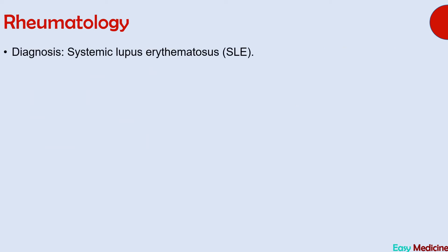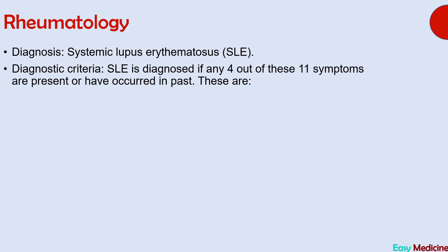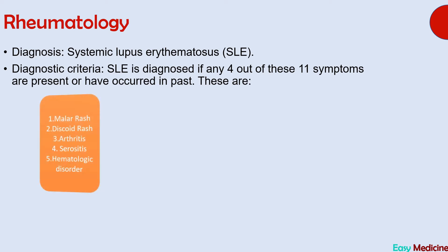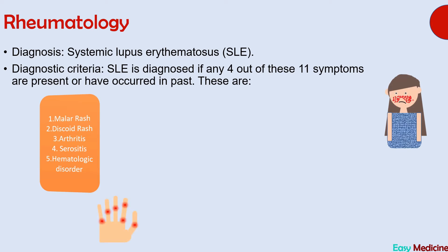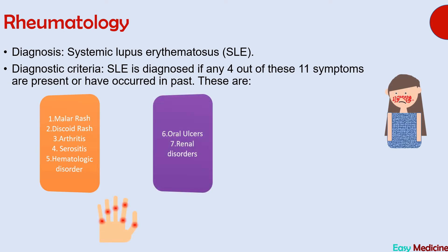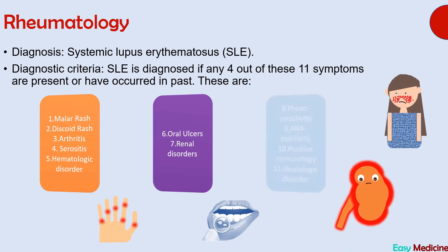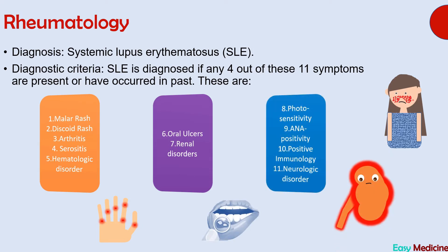The diagnosis is SLE. Two of the previous questions asked about diagnostic criteria. SLE is diagnosed if any four out of eleven symptoms are present or have occurred in the past. These symptoms are: malar rash, discoid rash, arthritis, serositis, hematological disorder, oral ulcers, renal disorder, photosensitivity, anti-nuclear antibody positivity, positive immunology, and neurological disorder. The mnemonic to remember these is 'RASH OR PAIN.'